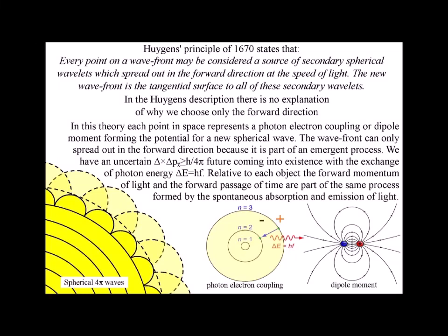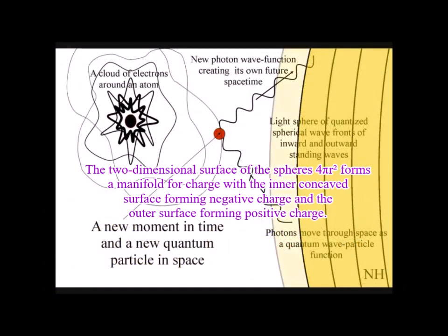Huygens' Principle states that every point on a wavefront may be considered a source of a secondary spherical wave, which spreads out in the forward direction at the speed of light.